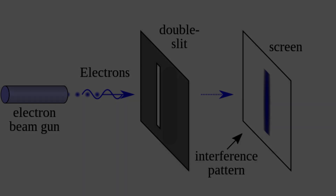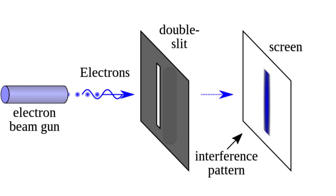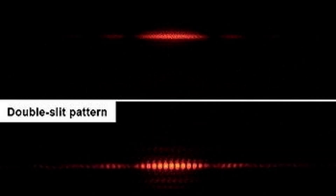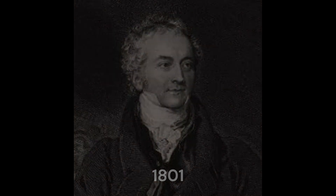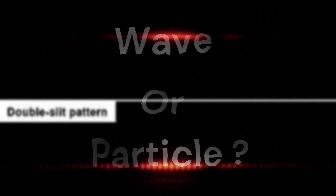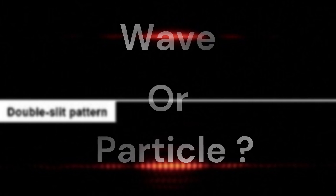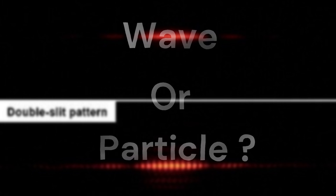But if we close just one slit and then shine the laser, only a particle pattern is observed. How is this possible? How can light show both wave and particle forms — and that too just by closing one single slit? Because of this, quantum physics had been divided into two different sects: those who believed light is a particle, and those who believed it is a wave.